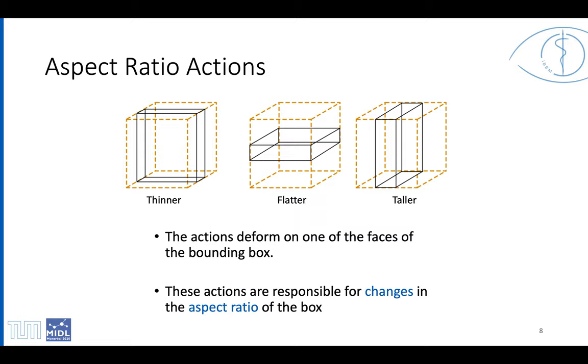Finally, the actions thinner, flatter, and taller represent a deformation on one of the faces of the bounding box. These actions are responsible for changes in the aspect ratio of the box, allowing the agent to fit the organ of interest.